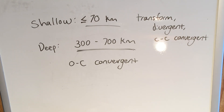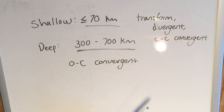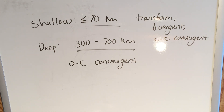Shallow focus earthquakes are much more common and they generally release a lot more energy. However, don't be misled by deep focus earthquakes — they occur along prevalent subduction zones, or places where oceanic crust is subducting beneath continental crust, like the West Coast of the United States. So that's a brief introduction to earthquakes: what they are, their basic parts, and two different types. Hopefully this was informative. Hope you enjoyed, and I'll see you in the next video.